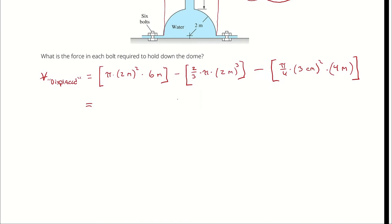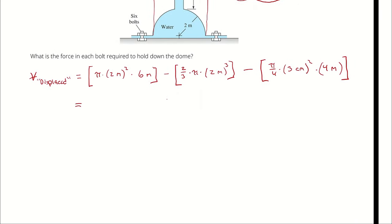If I multiply pi over four times three centimeters squared times four meters, I'm going to be left with a quantity in square centimeters times meters. So I will have to multiply this last term with one meter divided by 100 centimeters squared. I'm going to be dividing by 100 squared in that last quantity.